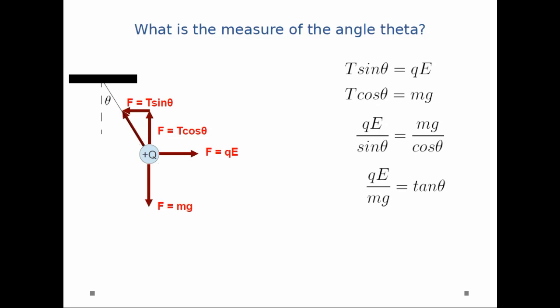I can rearrange the sine and the cosine to get tangent, and I can take the arctangent to get my final answer. Theta is equal to the arctangent of QE over Mg.